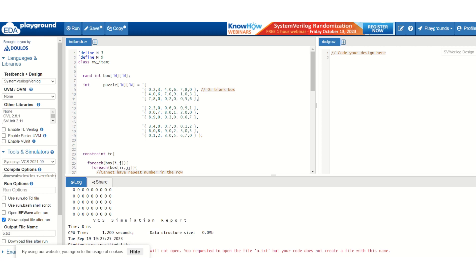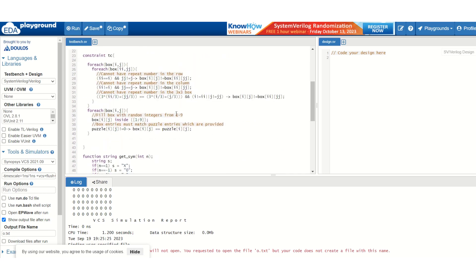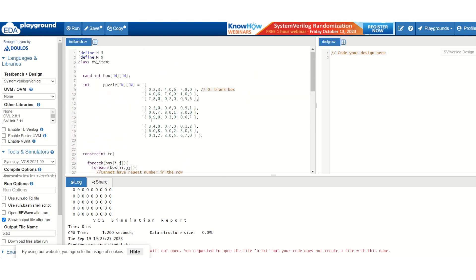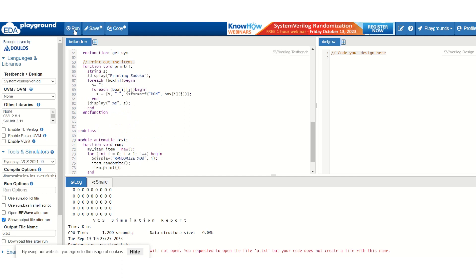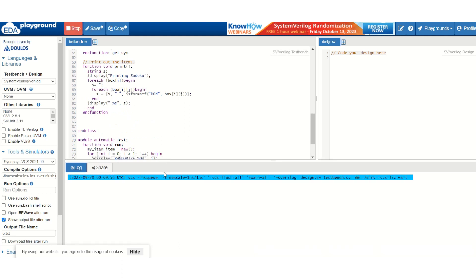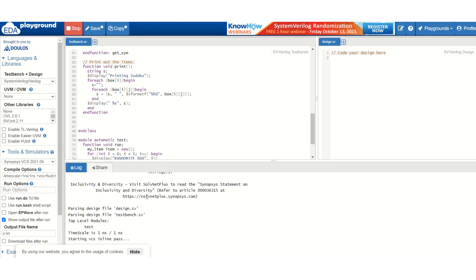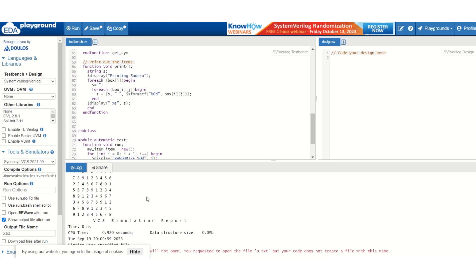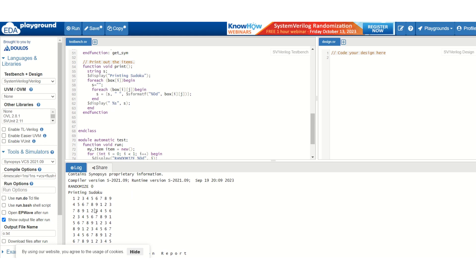I copied over the code in EDA playground and applied the same constraints that we discussed and kept the same problem. If we run this code, we will see that it prints out the final solution to the Sudoku.